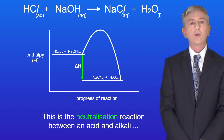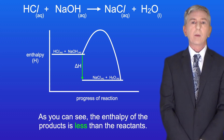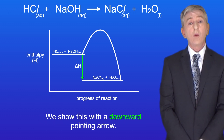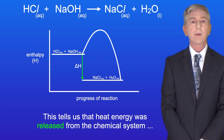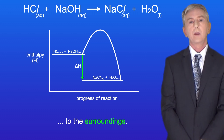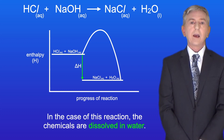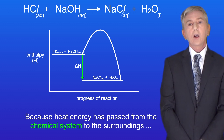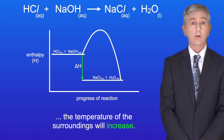This enthalpy profile represents the neutralization reaction between an acid and an alkali. As you can see, the enthalpy of the product is less than the reactants. This means that delta H is negative and we show this with the downward pointing arrow. This tells us that heat energy was released from the chemical system to the surroundings. In this case the chemicals are dissolved in water, so the surroundings are the water that the reaction takes place in. Because heat energy has passed from the chemical system to the surroundings, the temperature of the surroundings will increase.